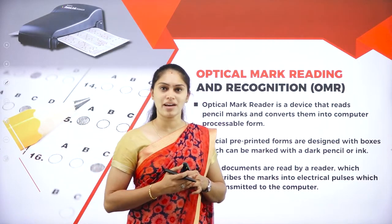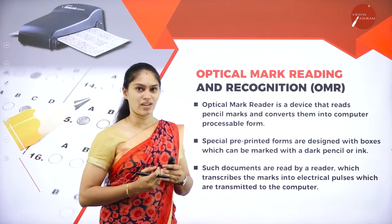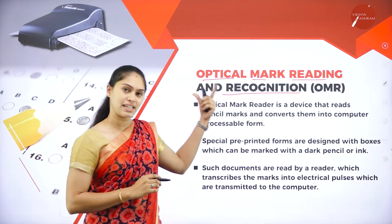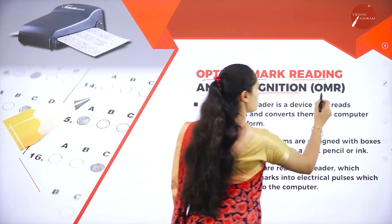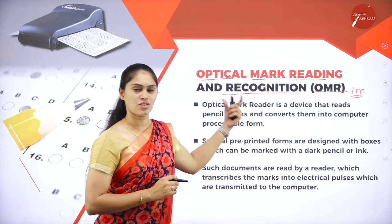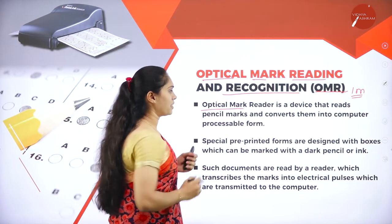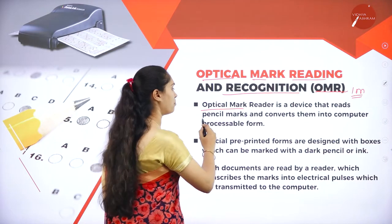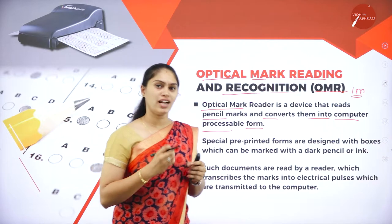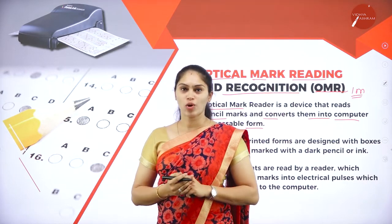The first optical media is OMR — Optical Mark Reader or Recognition. An optical mark reader is a device that reads a pencil mark or a pen mark and converts it into computer-processable form. We need to give input to the computer so it can process it, and OMR is one way to do this.